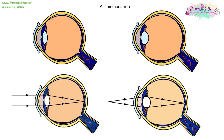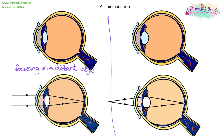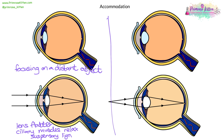Accommodation is when the shape of the lens changes to be able to focus on distant or nearby objects. Starting on the left-hand side, this is focusing on a distant object. You'll notice that the lens is flatter. This happens because the ciliary muscles relax and the suspensory ligaments are pulled tight, which means you're able to focus on a distant object.